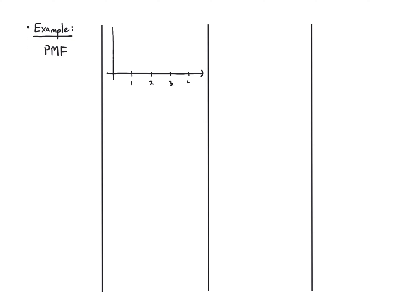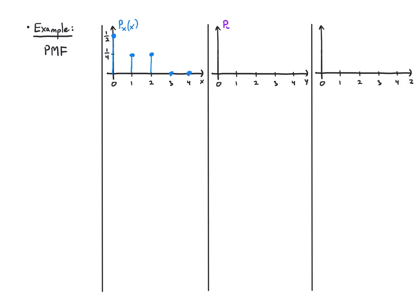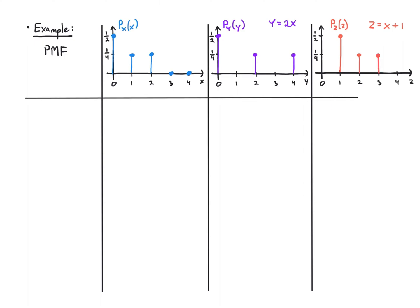Let's work out a longer example. I'll draw the PMF of x, which is very simple — three values: 0, 1, and 2, with probabilities one half, one fourth, and one fourth respectively. Then y equals 2 times x, so its PMF maps to 0, 2, and 4 with the same probabilities — it's just more spread out. And z is x shifted by 1, so its range is 1, 2, 3 with the same probabilities.